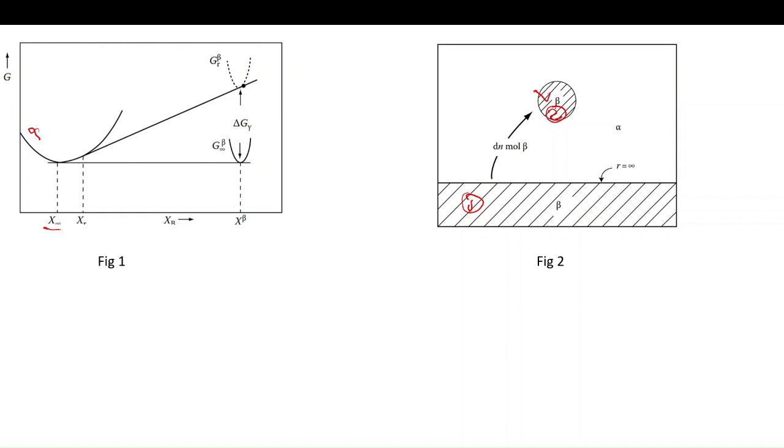So here xr is greater than x infinity, and that means we have an increase in solubility of B. So the range of solubility will increase due to this effect.